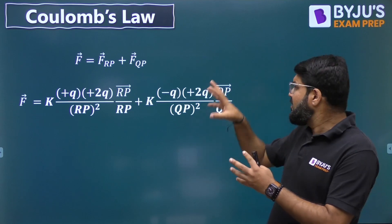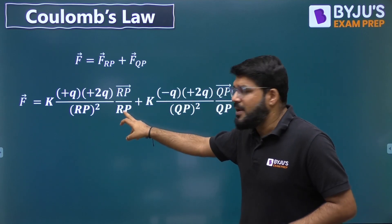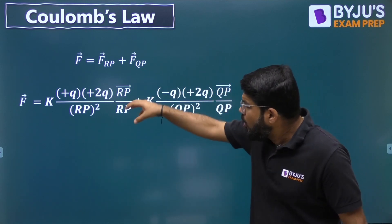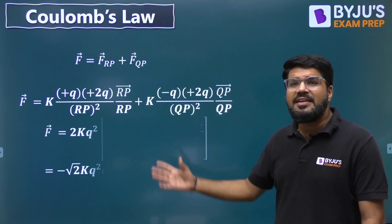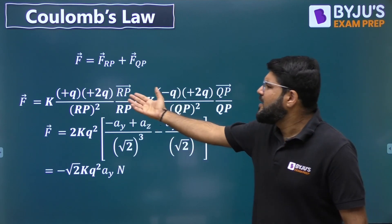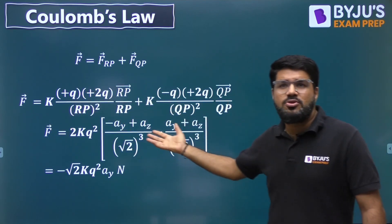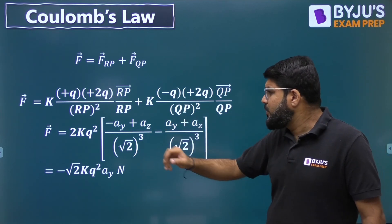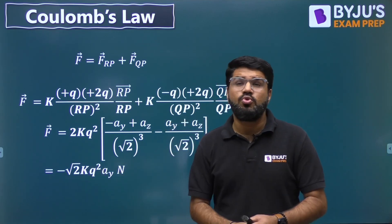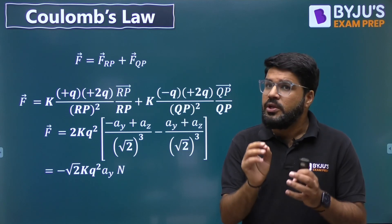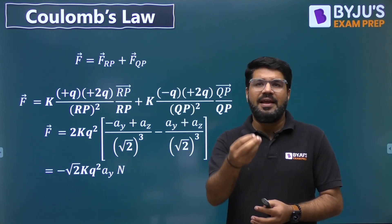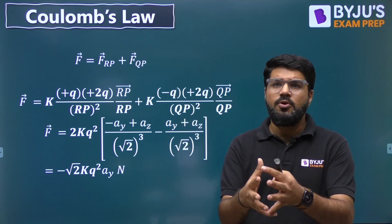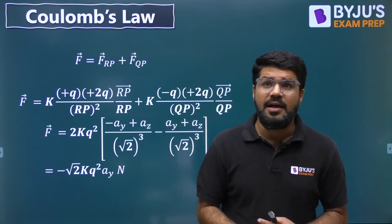We have calculated RP and QP. The magnitude is found using √(x² + y² + z²). Putting down all the values and taking 2KQ squared as common, looking at the final calculation — the Az and Az components cancel each other, and finally we get the net force as −√2 KQ² Ay Newtons. In GATE, they may give you the value of Q and you substitute K = 9 × 10⁹ to get a numerical answer, or they may ask only for the direction.